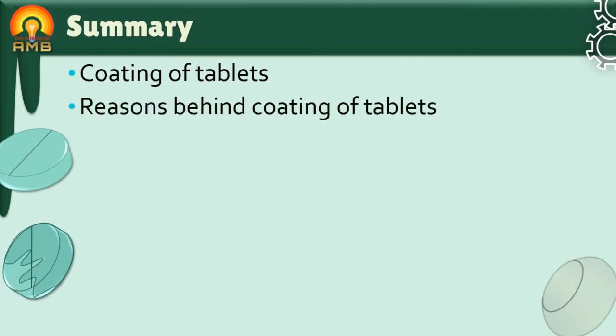Now it's time to summarize today's session. We discussed that tablets are coated to achieve some characteristics in the tablets. Masking of unpleasant taste and odor, protecting the drug from the environment, controlling the site of action of drug, and achieving sustained release of drug from tablet are some of the reasons behind coating of tablet.